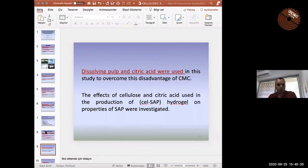To overcome this disadvantage, cellulose addition in the production stage of the superabsorbent from carboxymethyl cellulose and silica acid as a cross-linking agent were researched. And the effects of both practices on the properties of SAP were investigated.